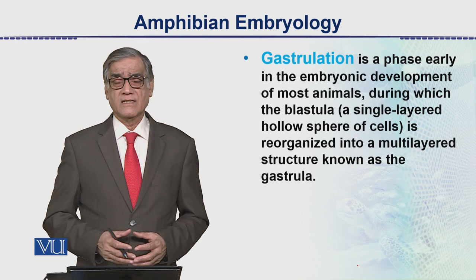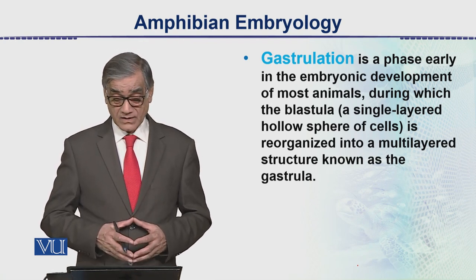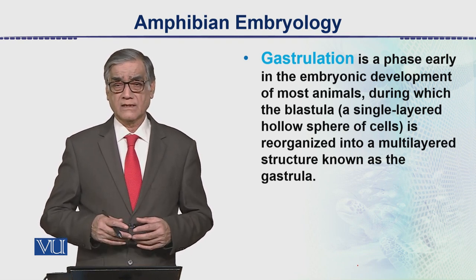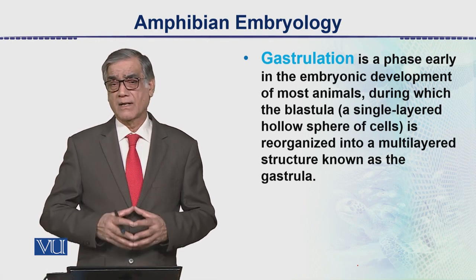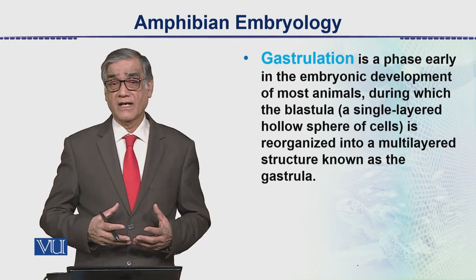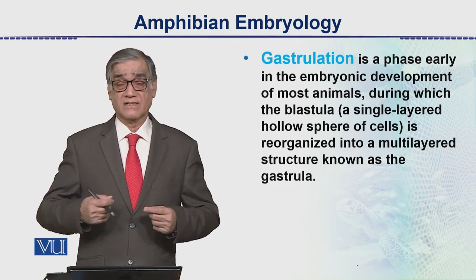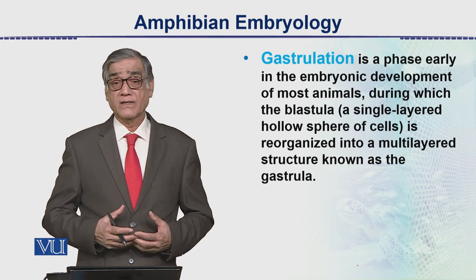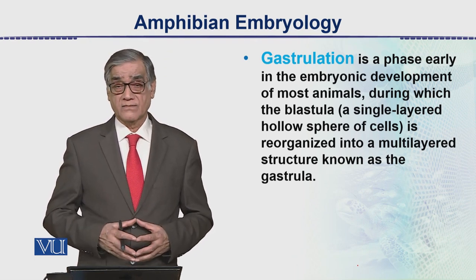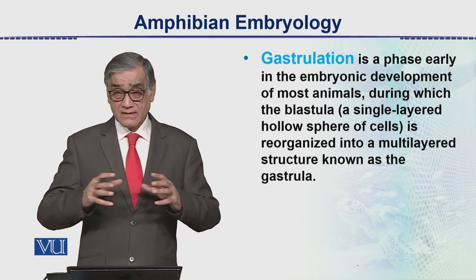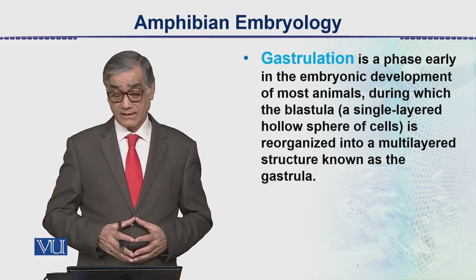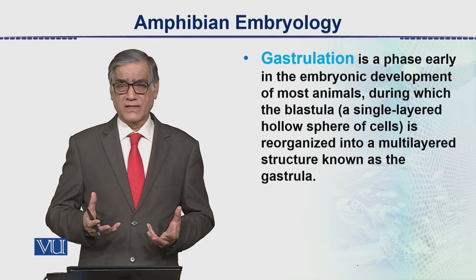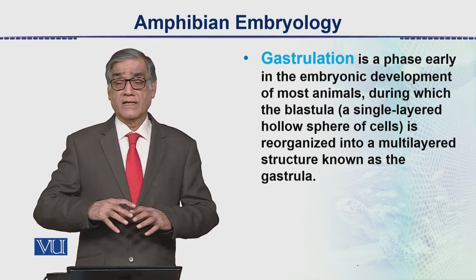The next process is gastrulation. Gastrulation is the phase early in embryonic development of most animals, and it is a very important stage. It involves a rearrangement of cells — cells literally move from one place to another — so as to develop a three-layered embryo called the gastrula.